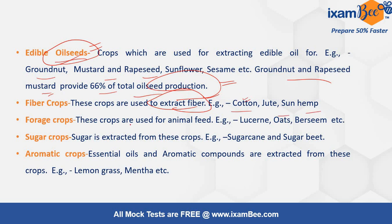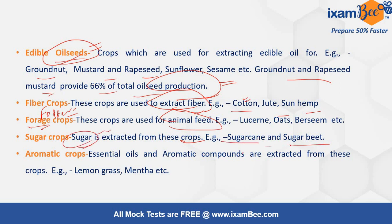Forage crops — also called fodder crops — are used for animal feed, like leucaena, oats, and berseem. Sugar crops are mainly for sugar extraction. Examples are sugarcane and sugar beet — mainly these two crops are used for sugar extraction.